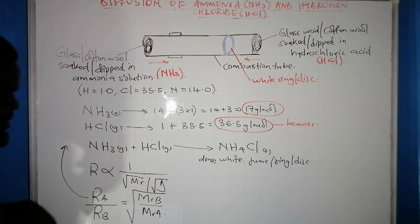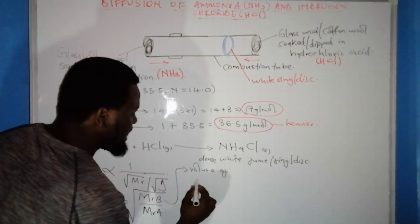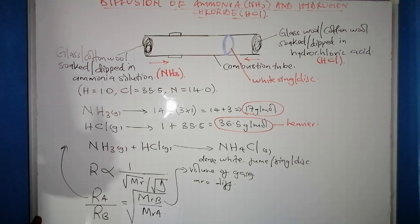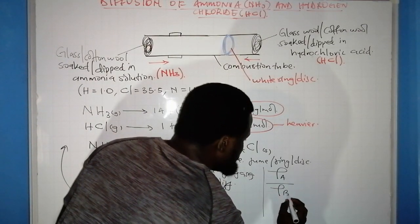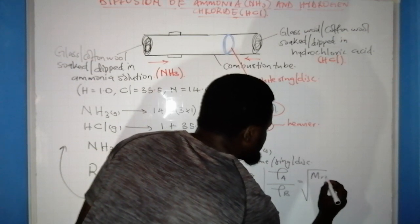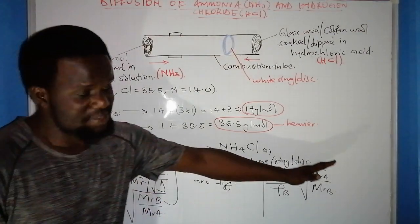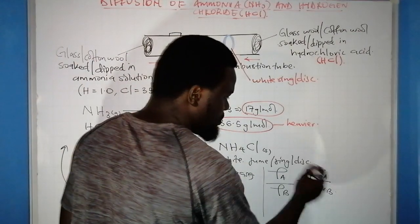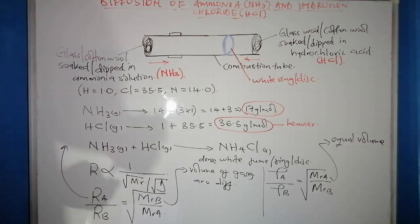We have two formulas. When the volumes of gases A and B are different, we use the rate formula. When the volumes are the same, we use the time formula: time of A over time of B equals the square root of molar mass of A over molar mass of B. With time, it is directly proportional to molecular mass, while with rate it is inversely proportional.